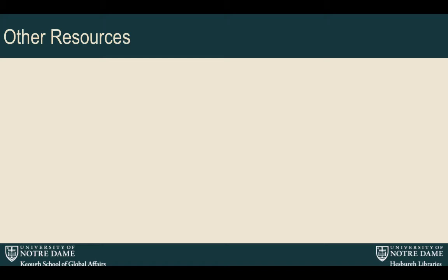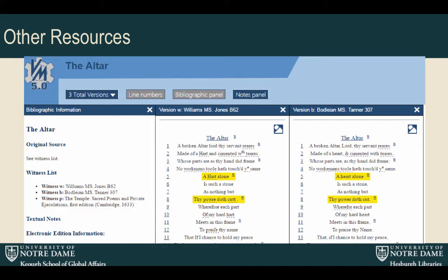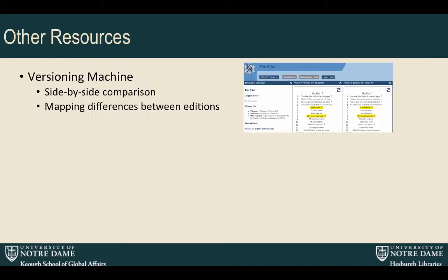We looked online at other resources. There are a few that did something similar to what we were looking to do, but not quite as far as we wanted to go. We looked at Virginia Machine, which allows you to compare two different versions of the same text and see how they've changed in different editions. This was helpful to put text side by side, but not exactly where we wanted to go.